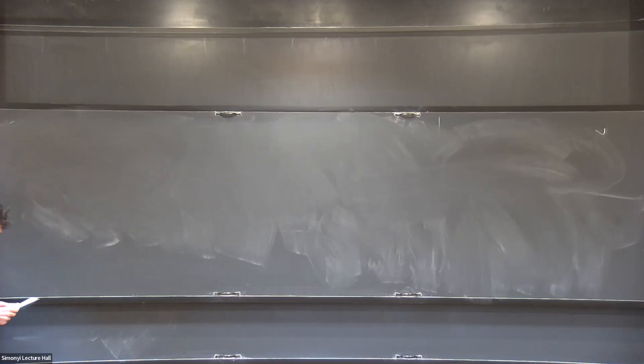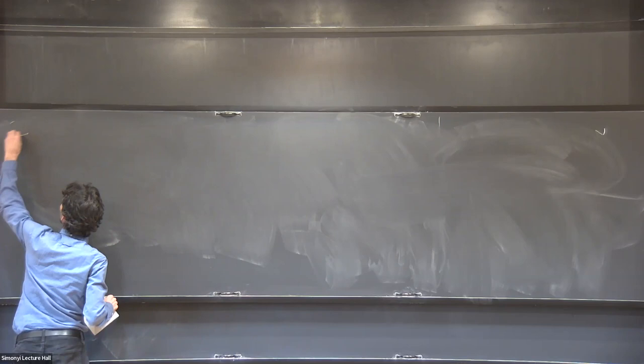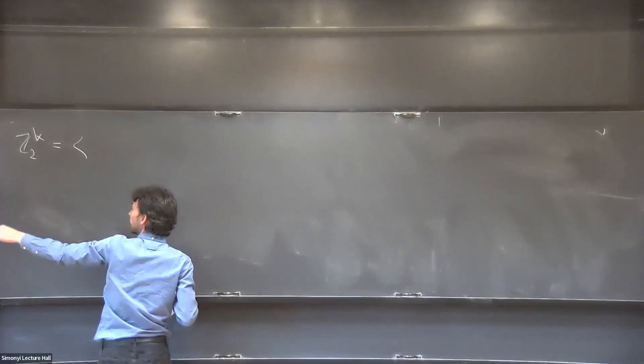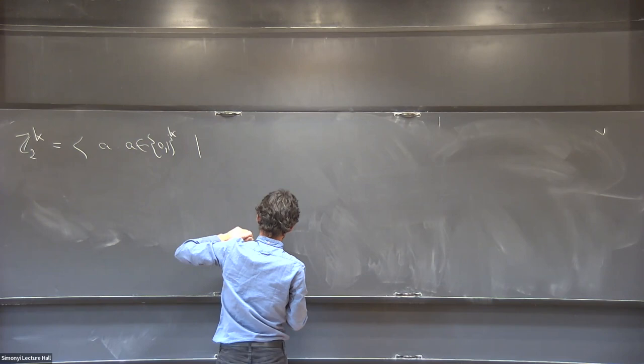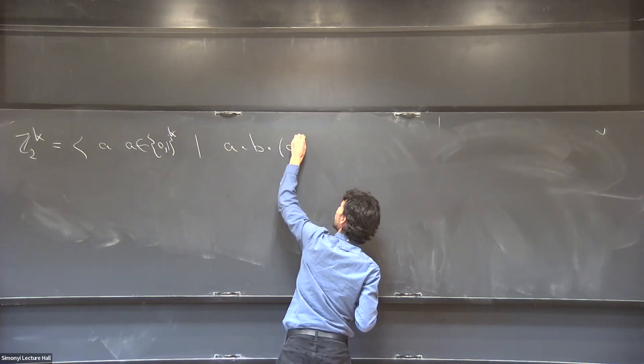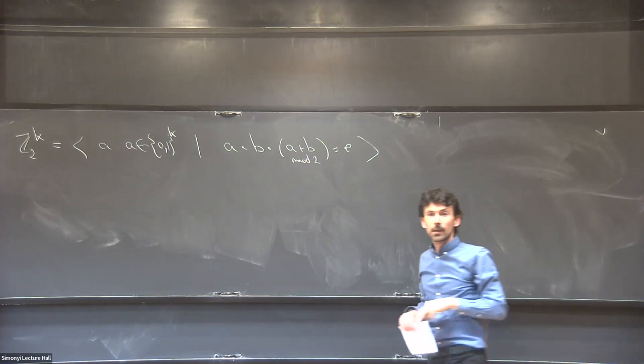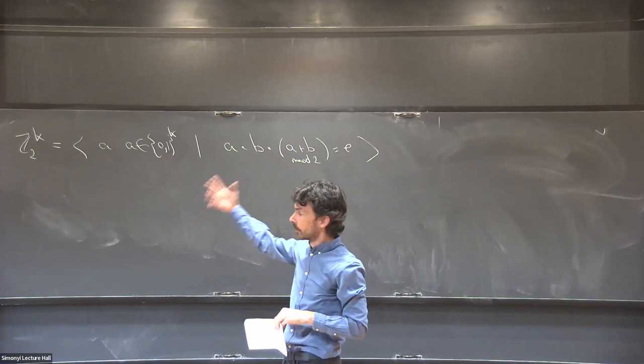Let me give an example with Z_2^K. I'll give two presentations. The first, from the theorem, uses all elements of Z_2^K as generators with relations a times b times (a+b mod 2)^(-1) — this is the multiplication table presentation. This presentation is stable. A shorter presentation would have only K generators, require them to be idempotent and pairwise commuting. This shorter presentation is much more efficient with logarithmically many generators.